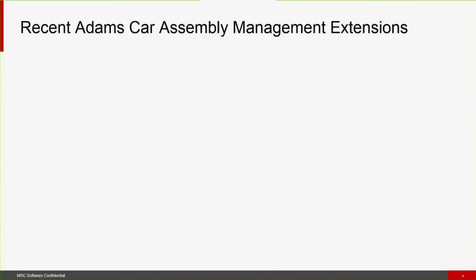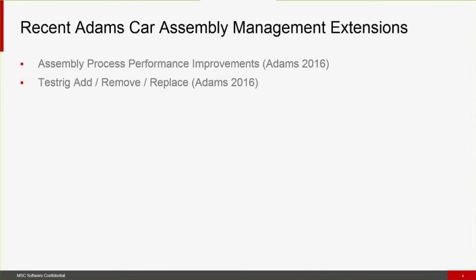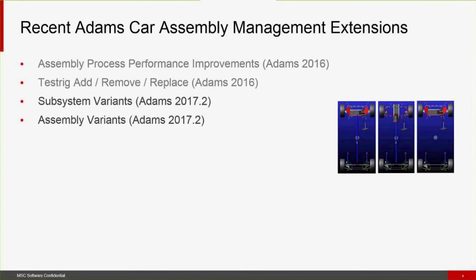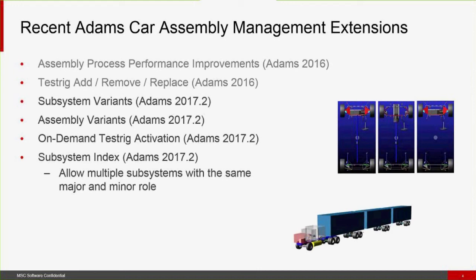Next, I want to talk about ADAMS car assembly management extensions. We've done a lot of work in this area in recent releases. In ADAMS 2016, we introduced the ability to have test rig add, remove, replace capability and improved the assembly process performance. In 2017.2, I'll talk about substantive assembly variance — abilities to have different configurations of the vehicle within a single assembly — on-demand test rig activation, and subsystem indexing, which allows multiple subsystems with the same major and minor role for repeated subsystems.